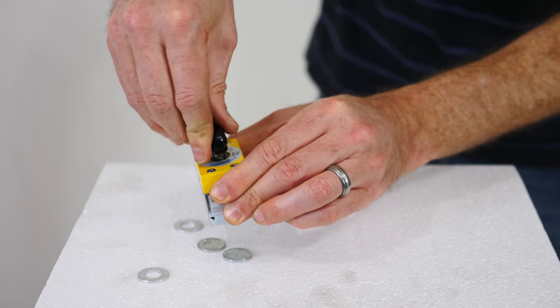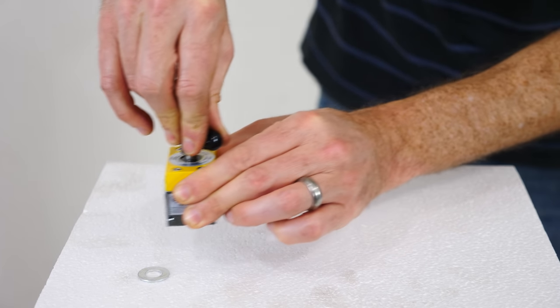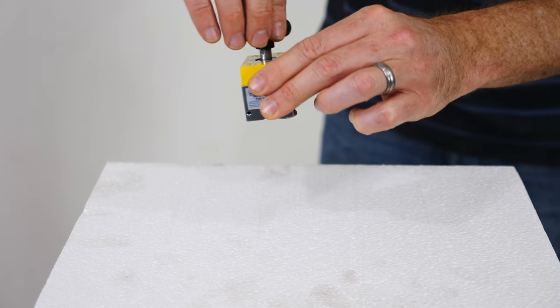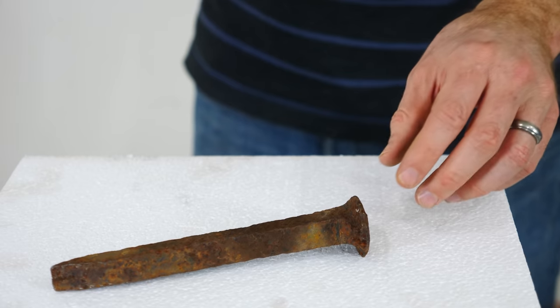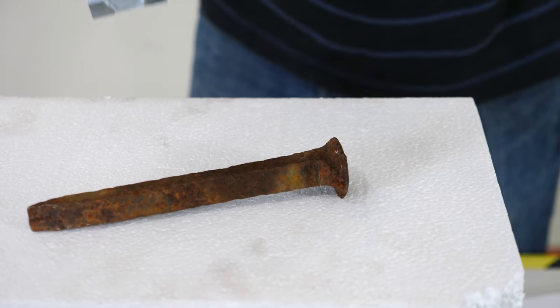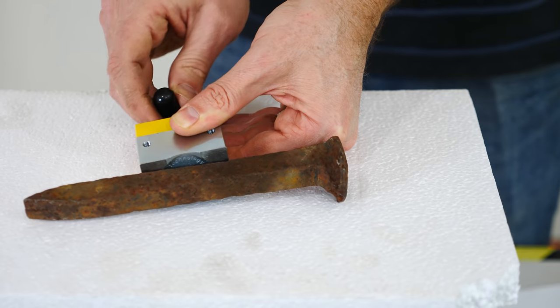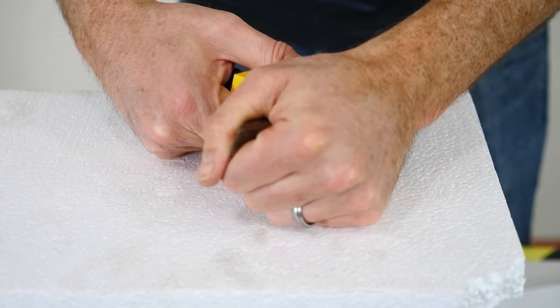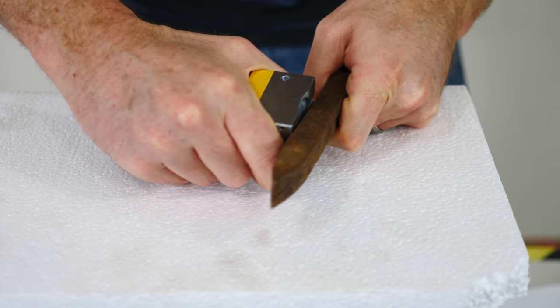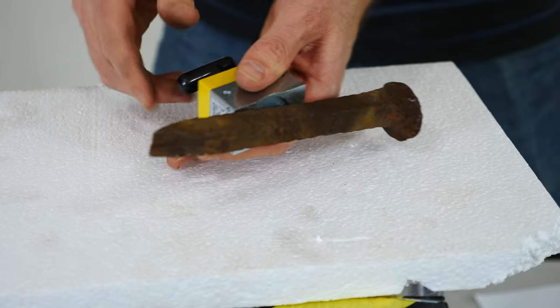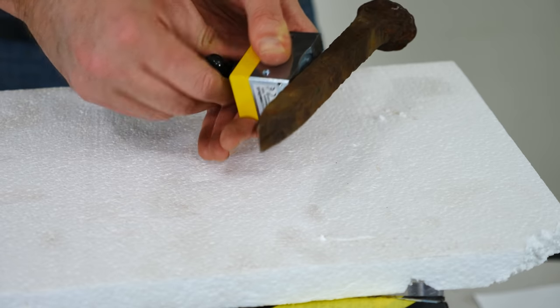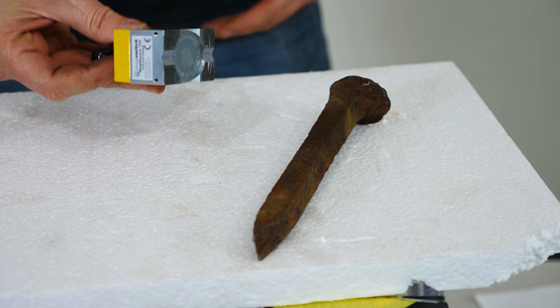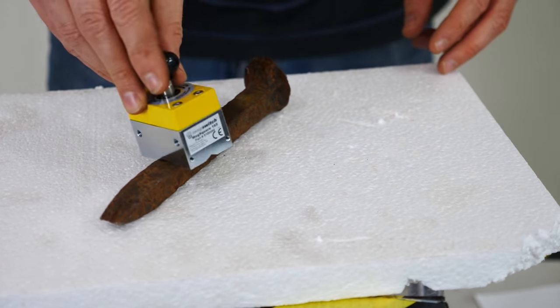But turn it back on and it just sucks them up. Here's a huge iron nail here. Turn it on. And I literally cannot pull this off. It is locked on there. But luckily I can just turn it off and it drops off like nothing. Then it's not attracted to it at all.